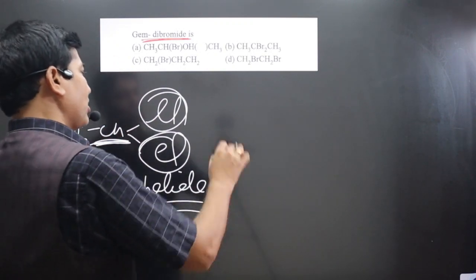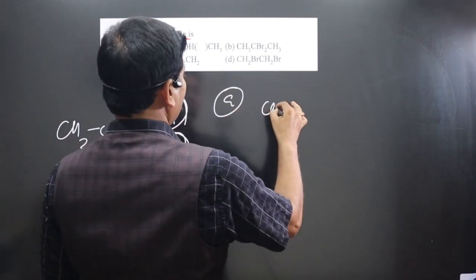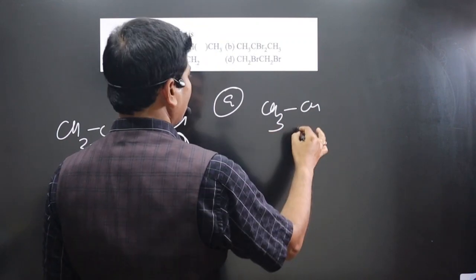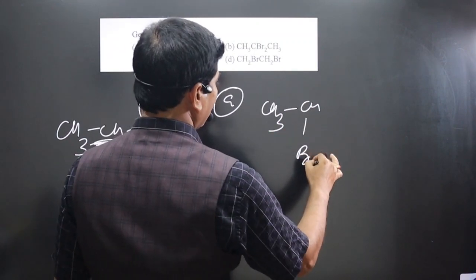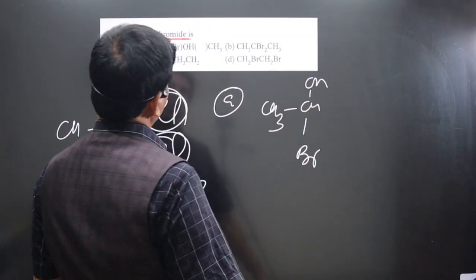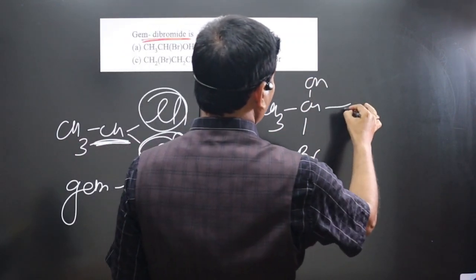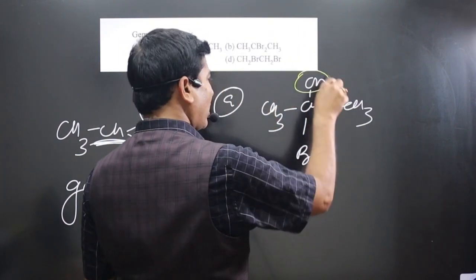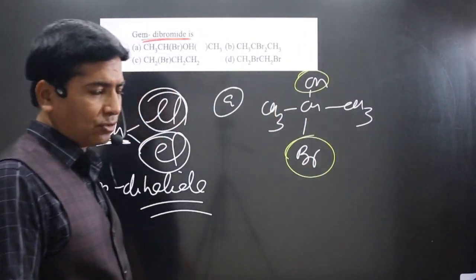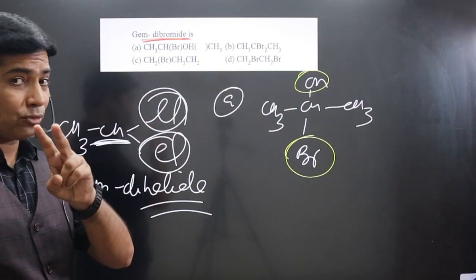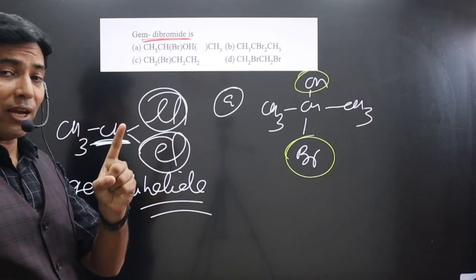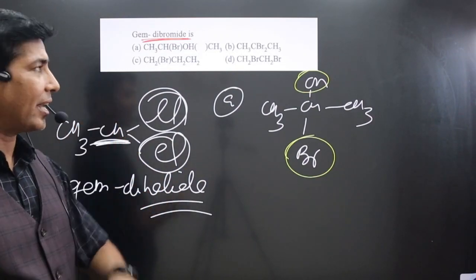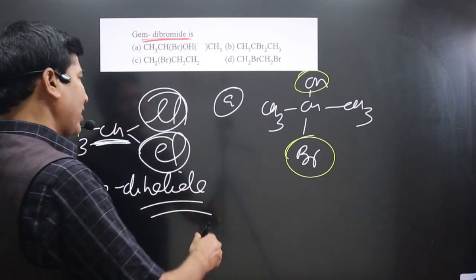Now for the first compound, CH3 is there, CH has Br attached and Cl is also attached, then we have CH3. You can see these two are different functional groups — two halogens are not on the same carbon, so it is a monohalide. It is not a dihalide.